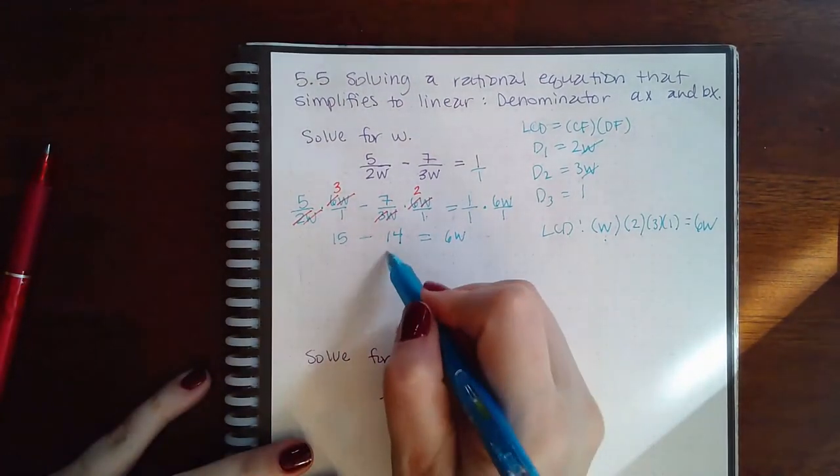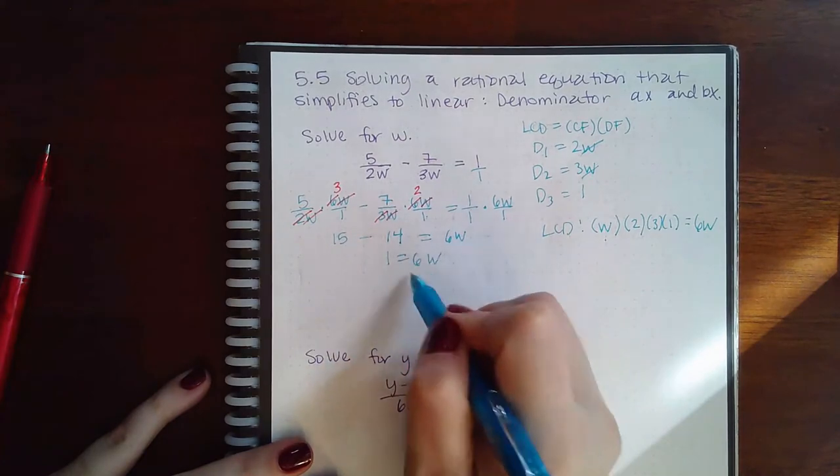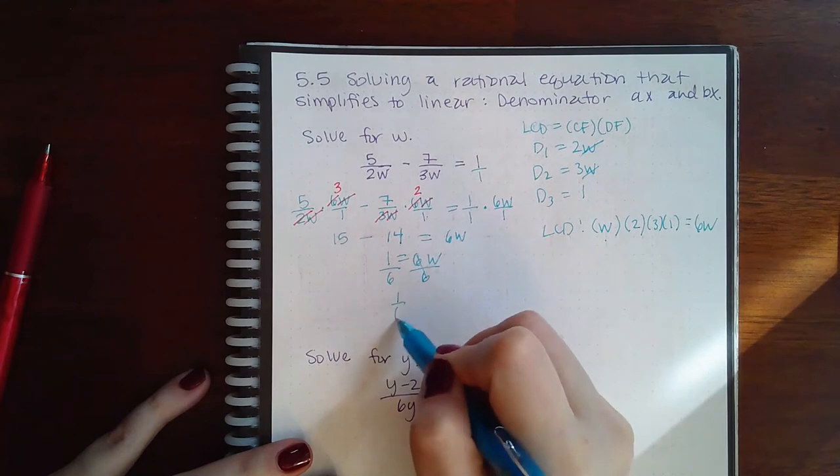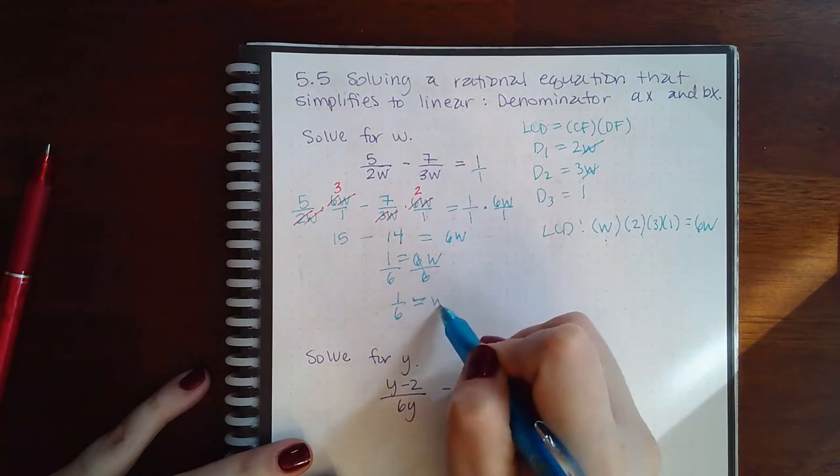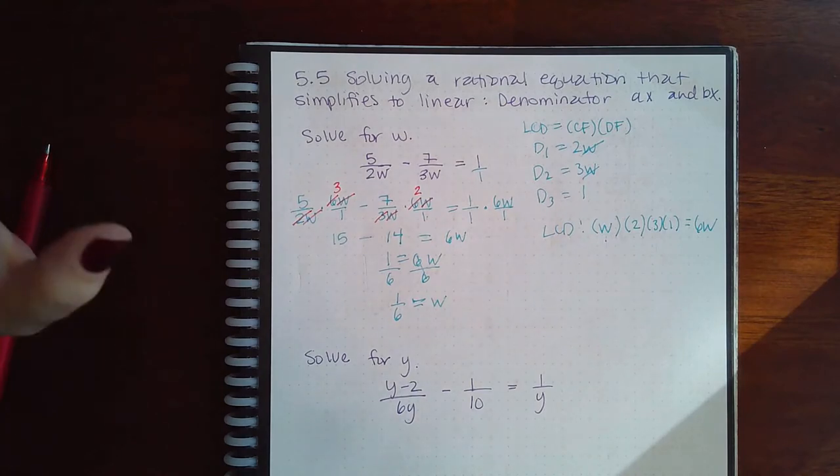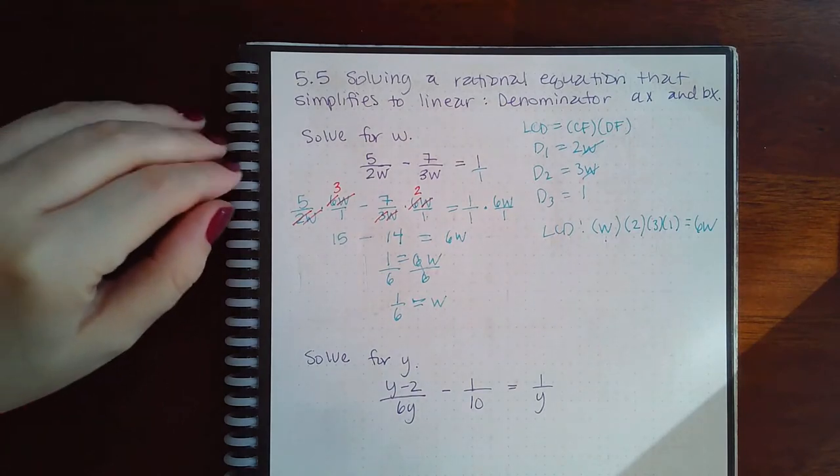So how do I solve this resulting equation? First we combine these like terms, then we divide both sides by 6, and we get that 16 equals W. So this is the potential solution. We need to verify whether it is an actual solution by making sure that it doesn't make any of our denominators 0.